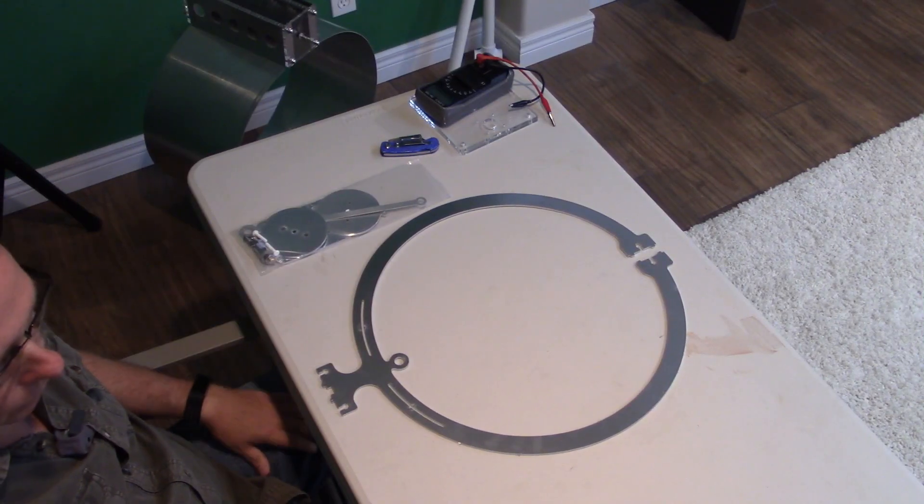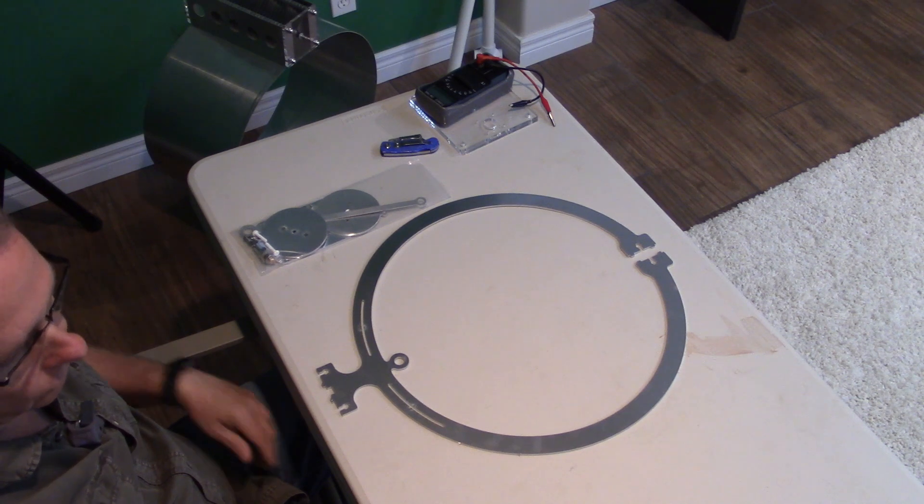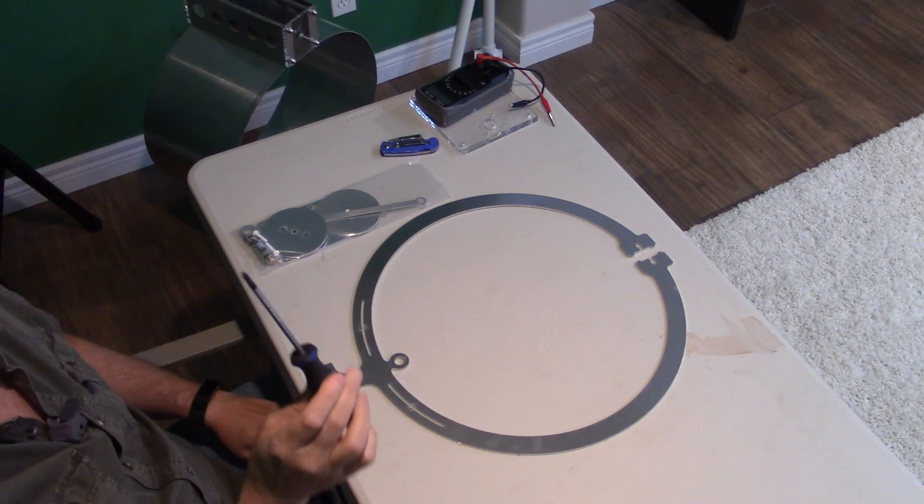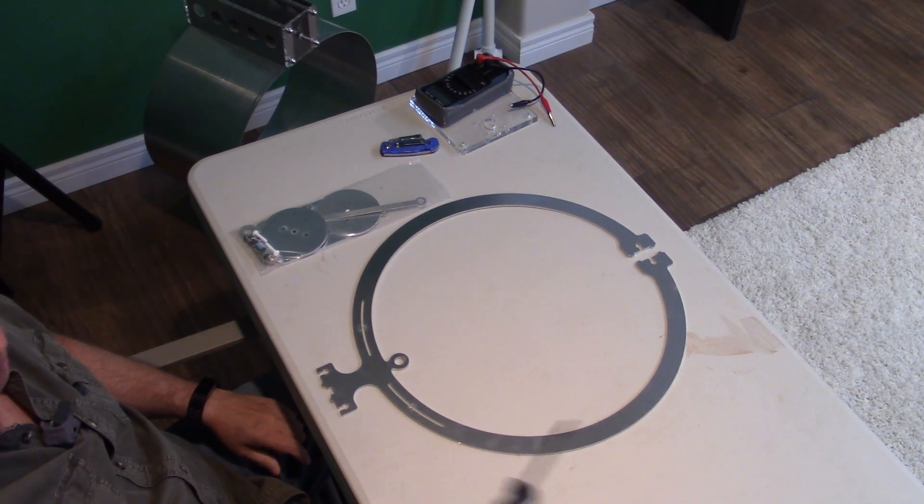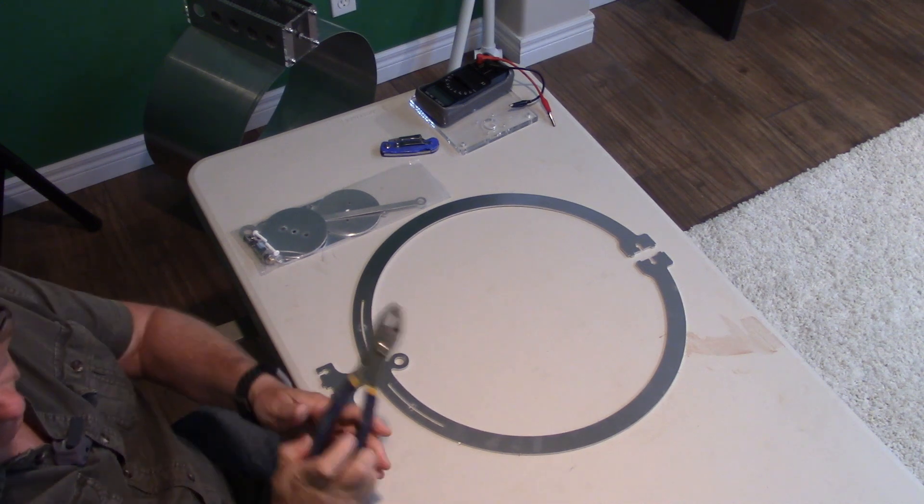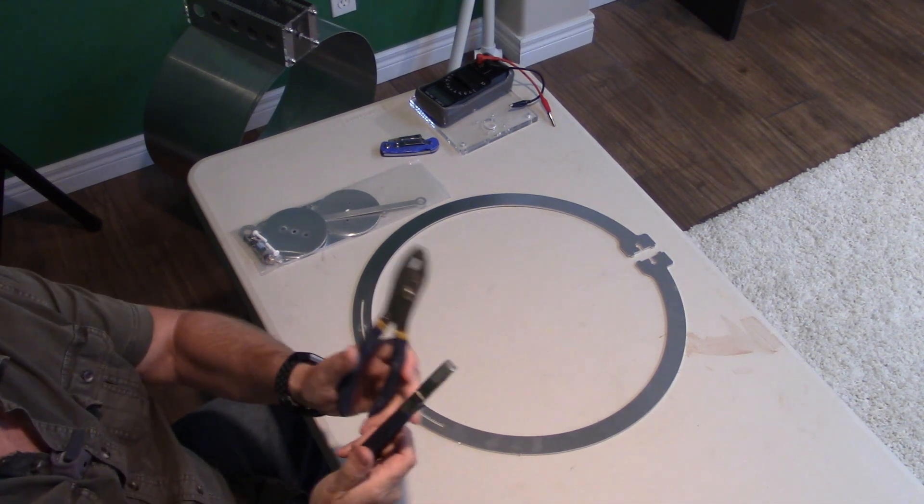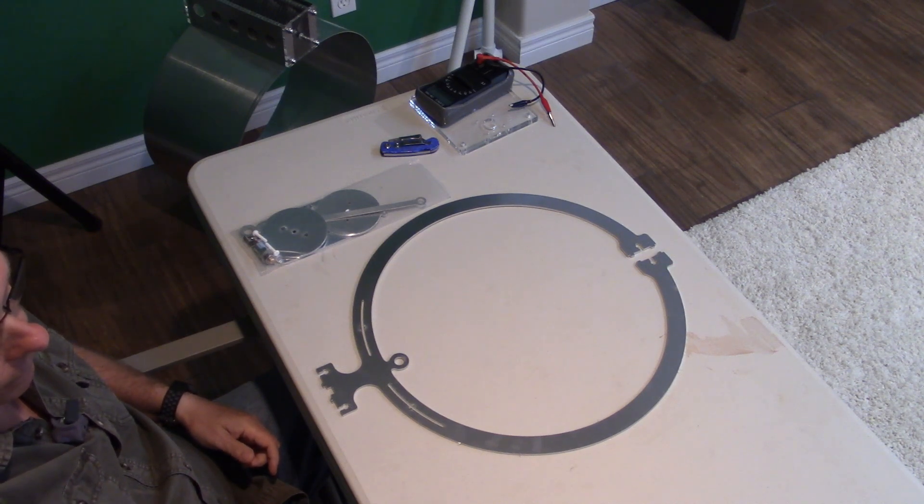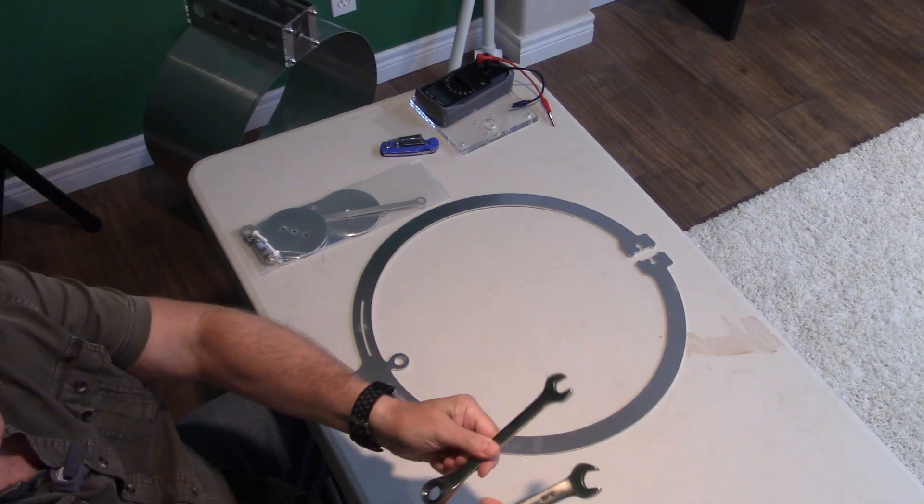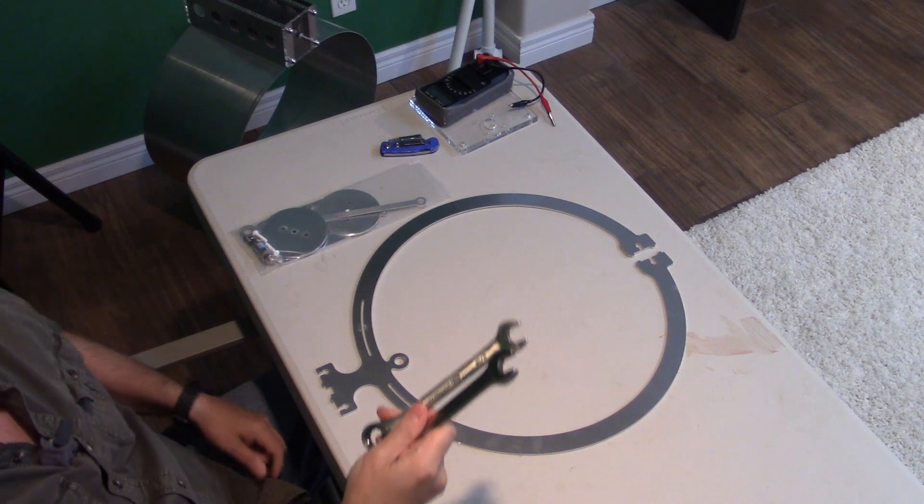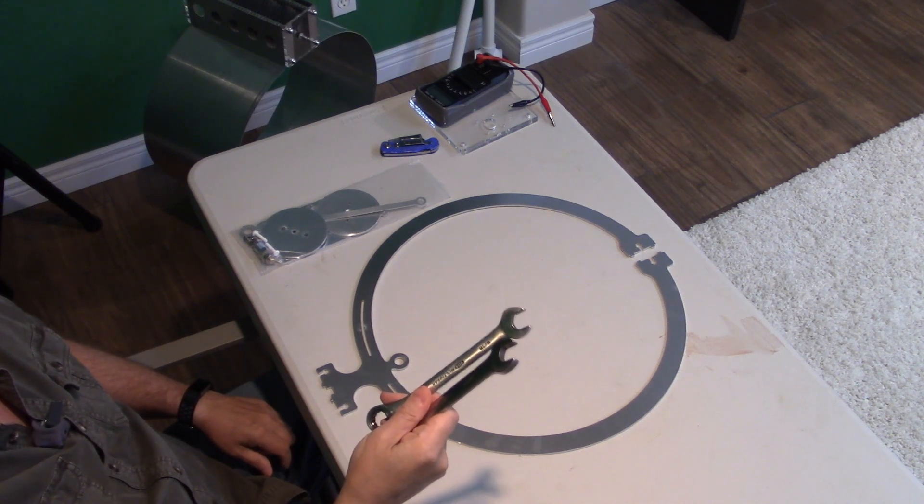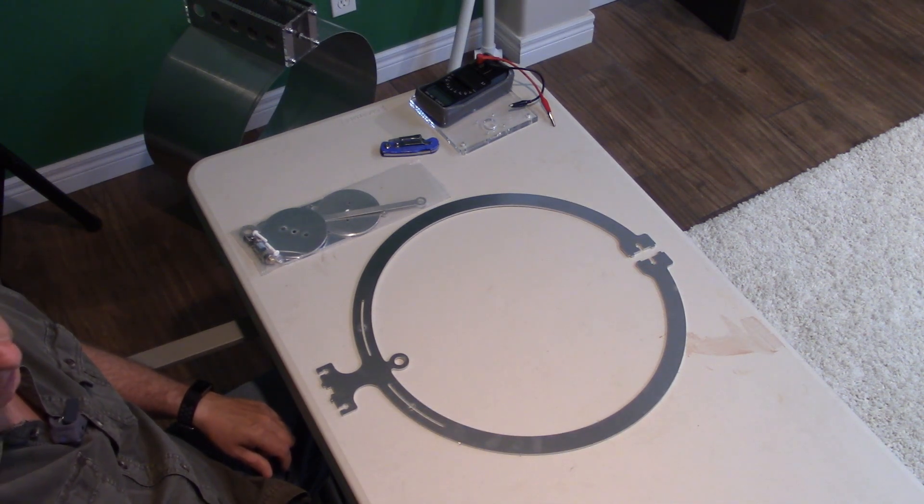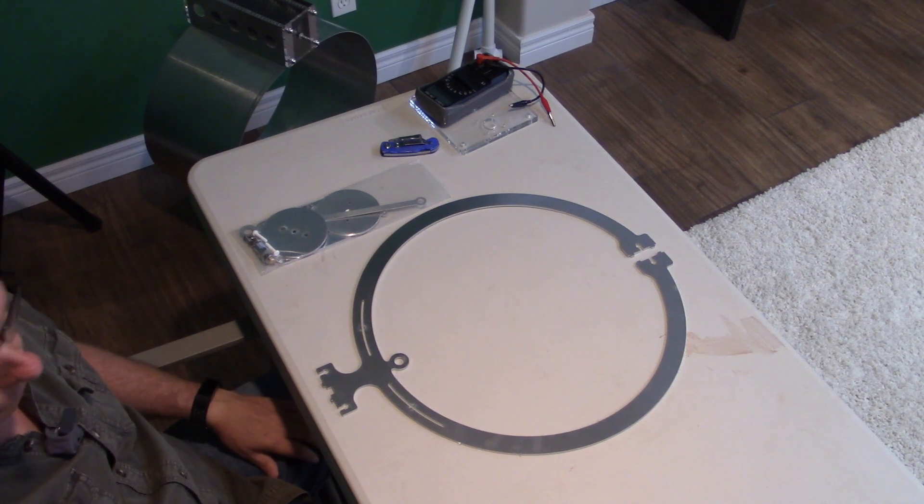Before we get started with the assembly, we're going to need a few basic tools. Number one, a Phillips head screwdriver. A couple of pliers, and ideally, the 5/8 and 9/16 inch open-end wrenches. Adjustable wrenches will work fine if you have to.